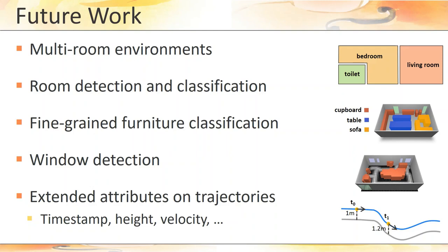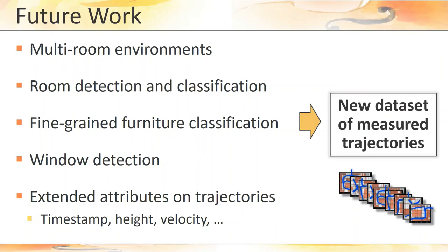Using richer trajectories that also include timestamp height and velocity would provide more input information to the networks and make these extensions more valuable. In fact, most of these goals depend on the creation of a large enough training data set of rear-world trajectories paired with a corresponding ground truth floor plan.